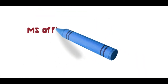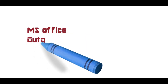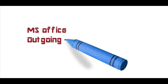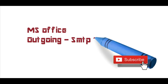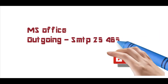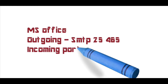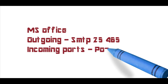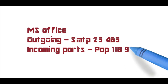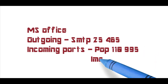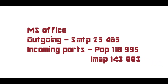We will install MS Office with Outlook and configure the outgoing and incoming protocols. For outgoing, SMTP default port is 25, then 465. For incoming ports, POP uses 995 and IMAP uses 143.